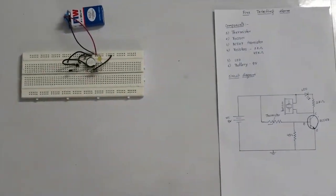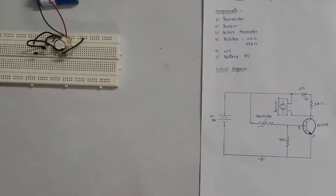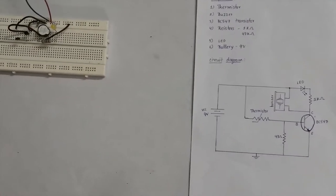If you see the circuit, the components are a transistor, buzzer, resistor, LED, and batteries.